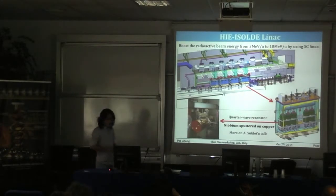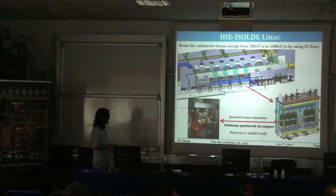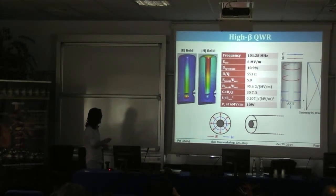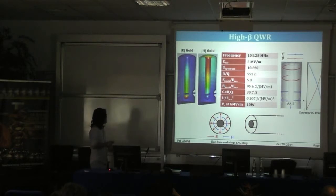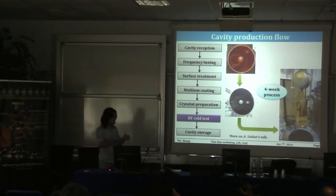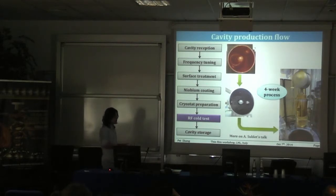The cavity we're working on is a real cavity going to be put into the HiSol project. The technology is niobium sputtered on copper — a quarter-wave resonator. The cavity shape is pretty standard, with the electric field focused on the tip of the antenna and the magnetic field on top of the cavity. The cavity is 100 MHz, working at 4.5 Kelvin, targeted at 10 watts maximum dissipation power at 6 MV/m. We're in production, so this is by no means a pure R&D project.